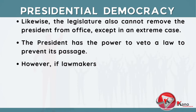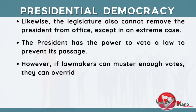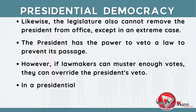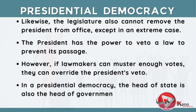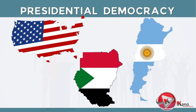However, if lawmakers can muster enough votes, they can override the president's veto. In a presidential democracy, the head of state is also the head of government. Countries like the United States, Argentina, and Sudan use this type of democracy.